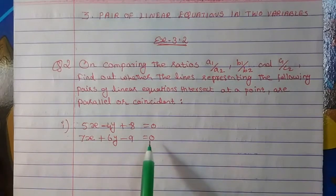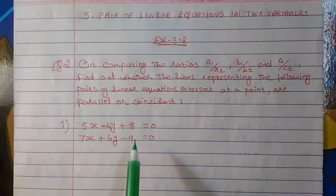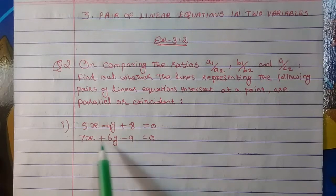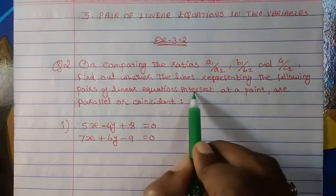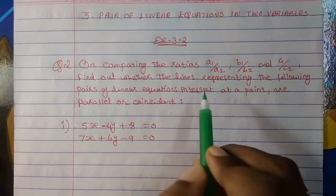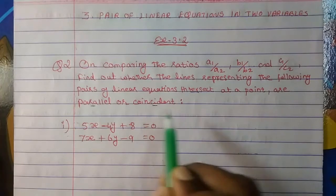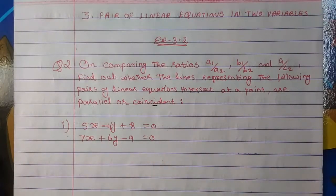So what we have to find out is, here we have the equations. We are not going to plot the graph here, but if we have to draw the graph, then our linear equations — both the lines — are they going to intersect, or are they going to be parallel, or are they going to be coincident? This I have explained in the introduction part.